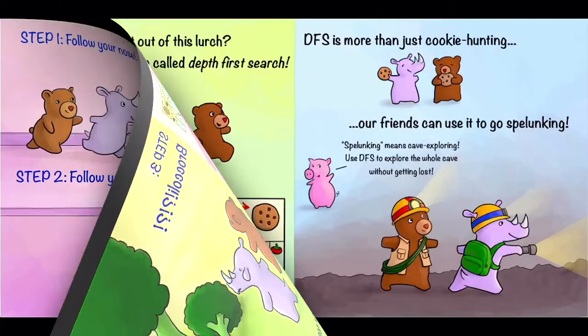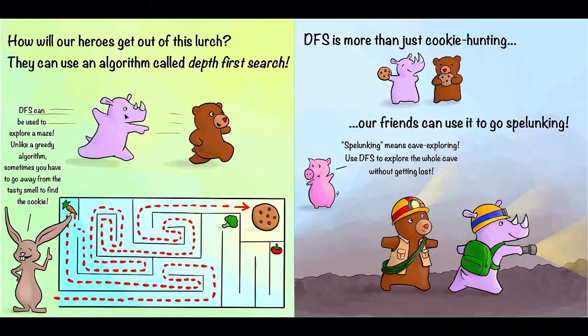But how would we do this algorithmically? Moving forward again, when we go to the next page, it asks, how will our heroes get out of this lurch? They can use an algorithm called depth-first search. Rabbit tells us that DFS, or depth-first search, can be used to explore a maze. Unlike a greedy algorithm, sometimes you have to go away from the tasty smell to find the cookie.